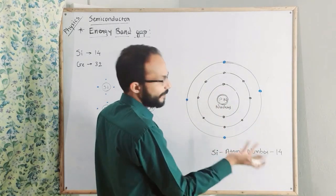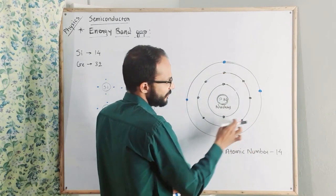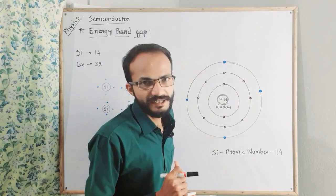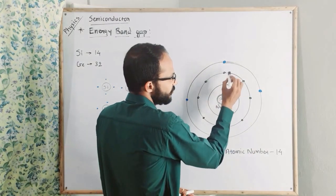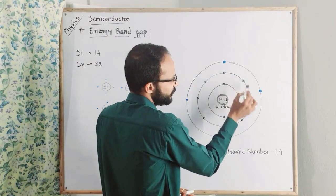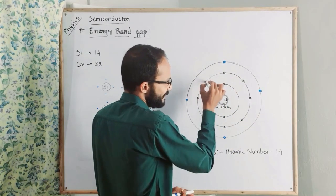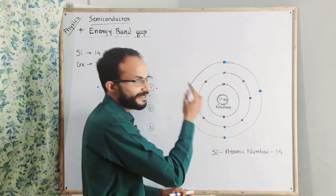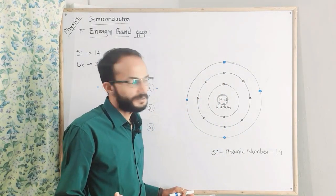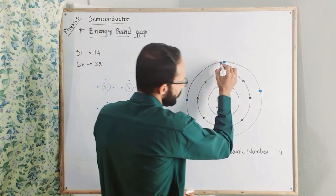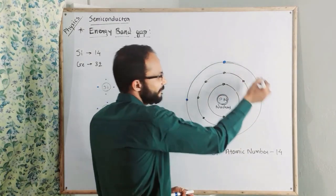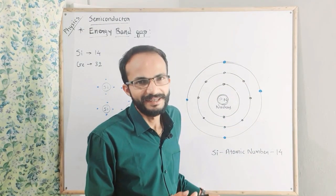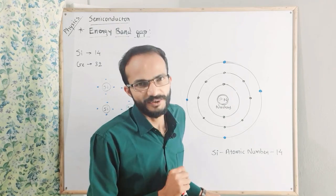Where is the second orbit? How many electrons will be in the second orbit? Eight. Eight electrons — the second orbit is completely full. What is the third orbit? How many electrons can consist in the third orbit? That is eight electrons maximum.